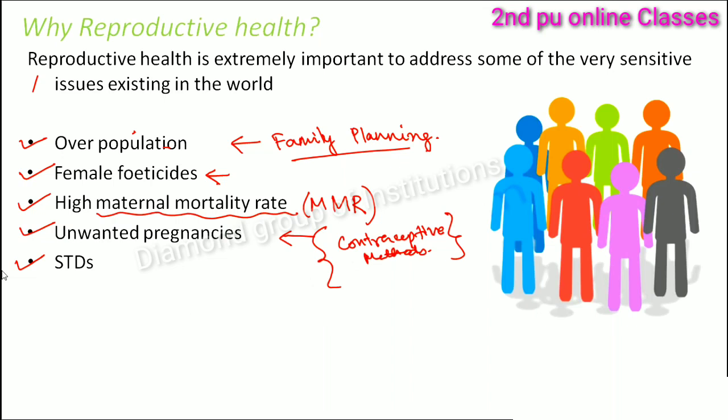These are things everybody should know at the right time, and the right time is when you are about to enter adolescence — because when you enter adolescence, you are entering the reproductive phase of your life. You are physically becoming capable of reproducing. That is when you should have all the information about reproduction and reproductive health, so that you do not end up doing something you might regret later.